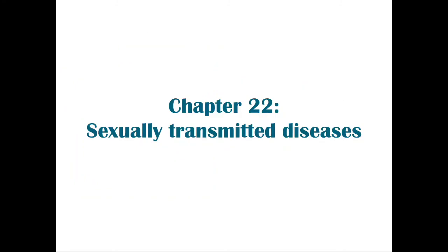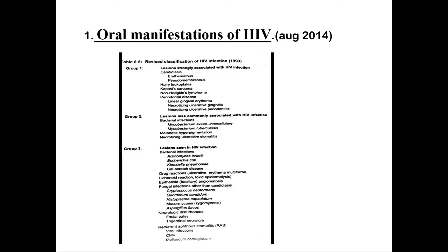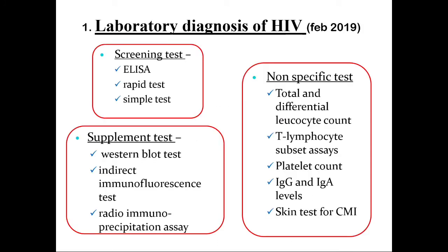The next chapter is sexually transmitted diseases, and the most favorite question is the oral manifestations of HIV. As enlisted in Anil Ghom's textbook and Ravikiran Ongole, it is divided into three groups: Group 1 — lesions strongly associated with HIV; Group 2 — lesions less commonly associated with HIV; and Group 3 — lesions seen in HIV cases. The laboratory diagnosis of HIV includes screen tests, supplementary tests, and non-specific tests.